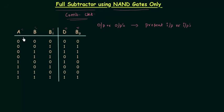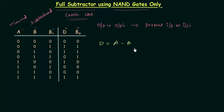a is the minuend, b is the subtrahend, and b-i is the borrow input. d is the difference and b-o is the output borrow. To calculate d, the difference is equal to a (minuend) minus b (subtrahend) minus b-i (input borrow). The borrow output is equal to one, or high, whenever there is a borrow involved.